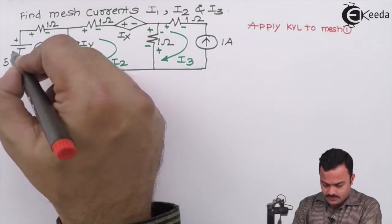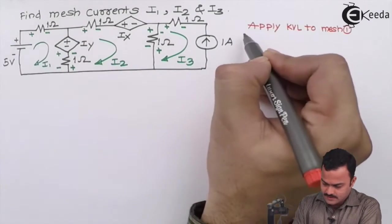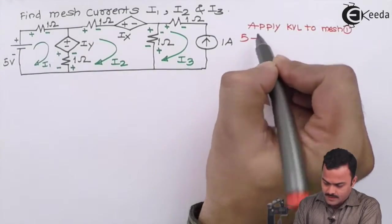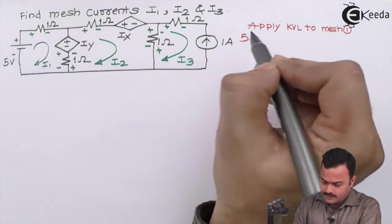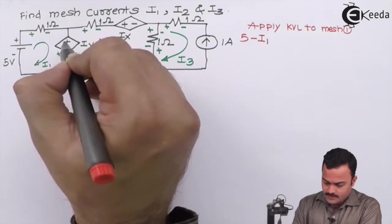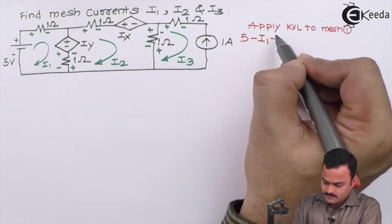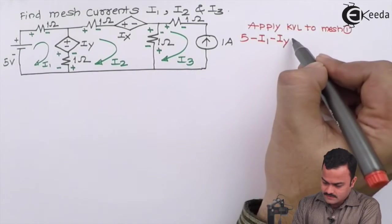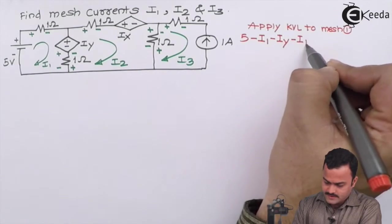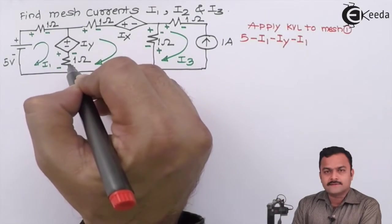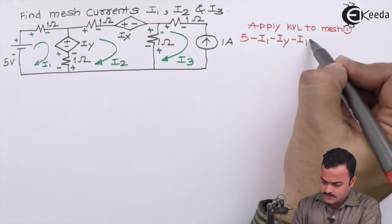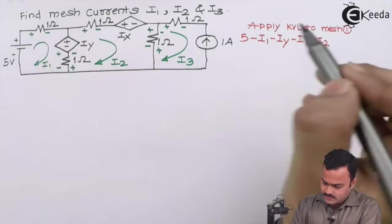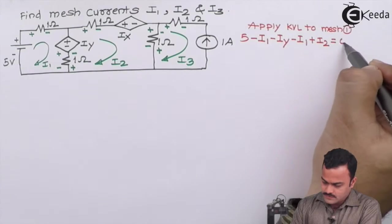Starting from the voltage source, we'll have: plus 5, then minus 1 multiplied by i1, giving us minus i1, then minus iy, then minus i1, and plus i2 because of mesh 2 interaction. Setting this equal to zero completes the KVL equation for mesh 1.